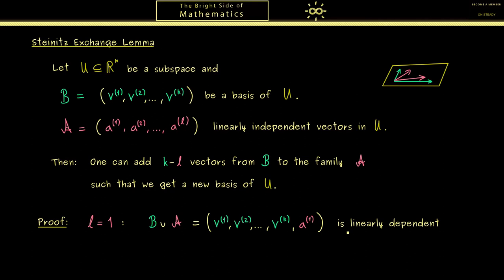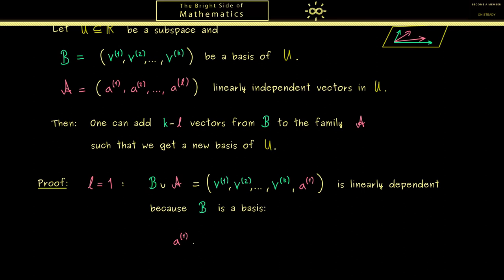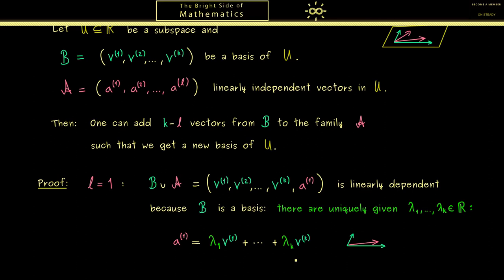And the first fact we can conclude here is that this new family here is linearly dependent. And we should immediately see this because B is already a basis of our subspace U. This means our vector a^1 can be written as a linear combination of the basis vectors. So we find uniquely given coefficients lambda_1 to lambda_k such that a^1 is equal to lambda_1 times v^1 and so on. Hence you see, a^1 can be spanned by our k basis vectors here. And of course, this immediately means that our family here is clearly linearly dependent.